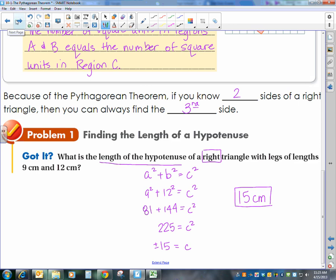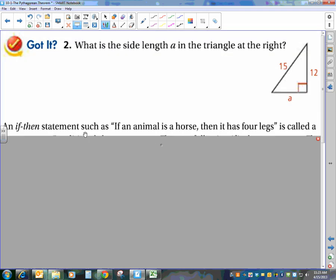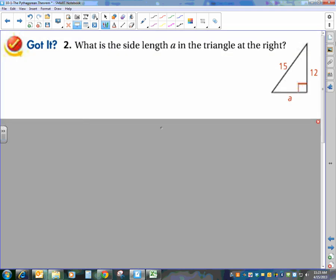So look at the next one, another example. What is the side length A in the triangle at the right? So I'm going to clean this up just a little bit so it's not too distracting there. What is the side length of A in the triangle at the right? So again, I have a right triangle. So you want to think Pythagorean theorem, A squared plus B squared equals C squared. And the important thing is to make sure the longest side is C. So you can see from our picture that that is 15.